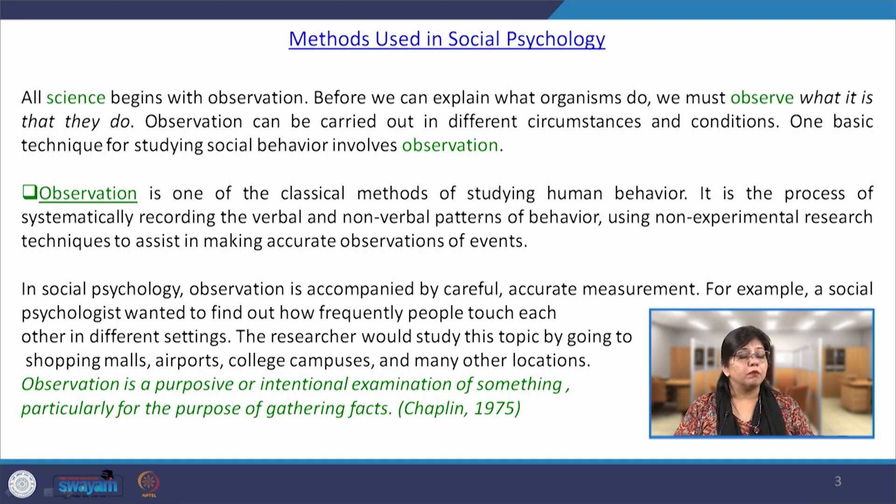Initially, I will talk about the quantitative methods of research used in social psychology. The most popular form of research method used in social psychology is the observation method. As we know, science as a discipline of human behavior begins with observation. Before we can explain how an individual behaves and what reasons lead to a specific aspect of behavior, it requires strong observation carried out in different circumstances and conditions. Observation is one of the most basic, significant, and classical methods of studying human behavior.